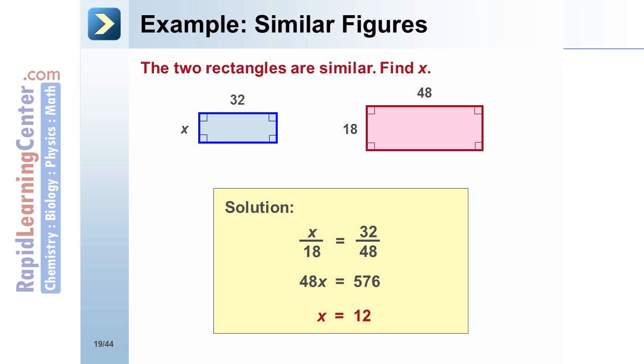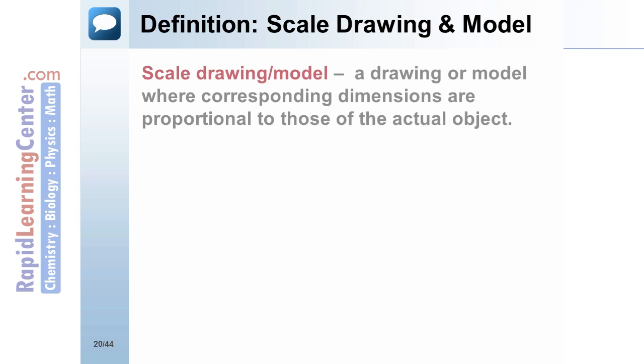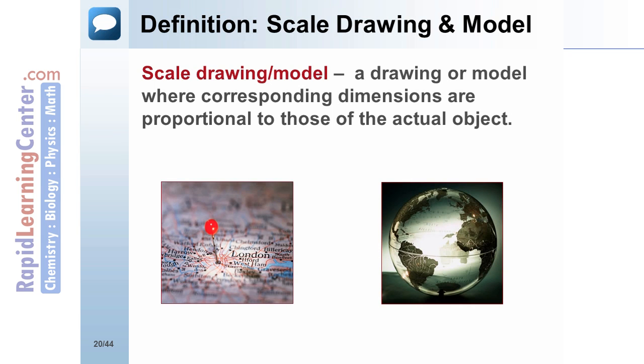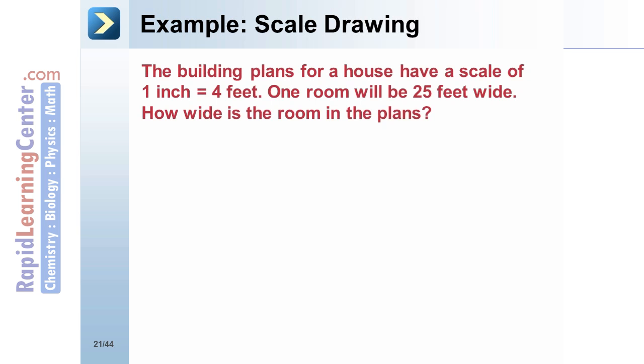Definition: Scale Drawing and Model - A scale drawing or model is a drawing or model where corresponding dimensions are proportional to those of the actual object. Maps and globes are examples of scale drawings and models.